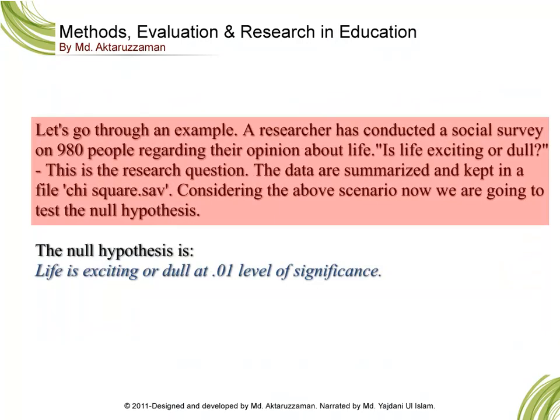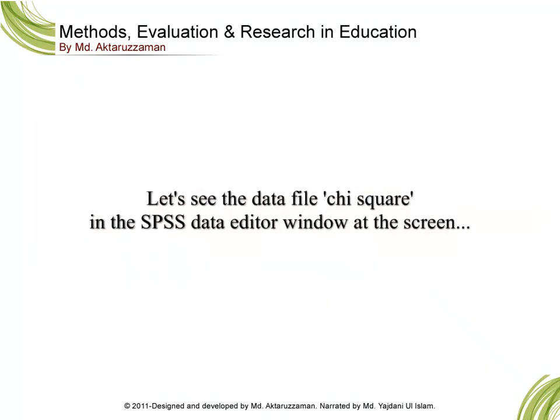Let's go through an example. A researcher has conducted a social survey on 980 people regarding their opinion about life — is life exciting or dull? The data are summarized and kept in a file called chi-square. We are going to test the null hypothesis that life is exciting or dull, at a .01 level of significance.